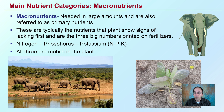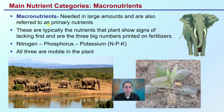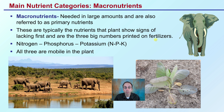The first category is going to be macronutrients. They are needed in large amounts, and that's why I have the picture of the elephant here. They might also be referred to as primary nutrients. These are typically the nutrients that plants show signs of lacking first, as they are needed in large or macro amounts. These are also the big three numbers that are printed on fertilizer labels.